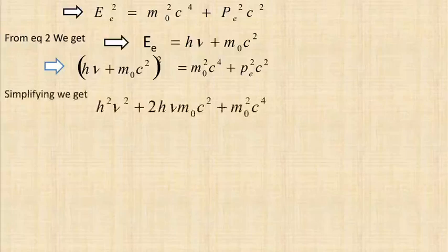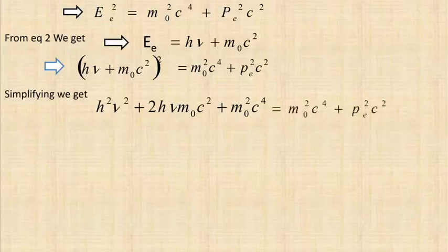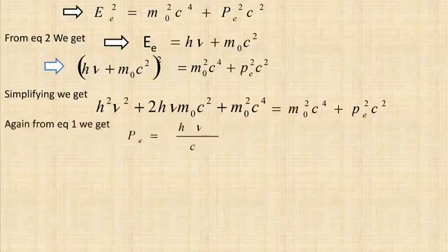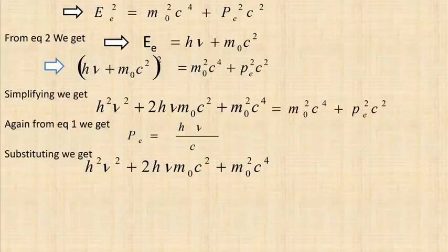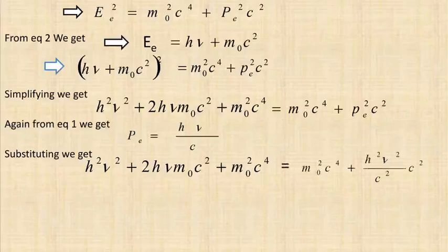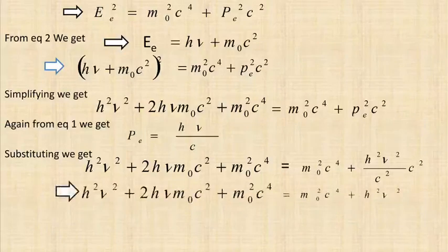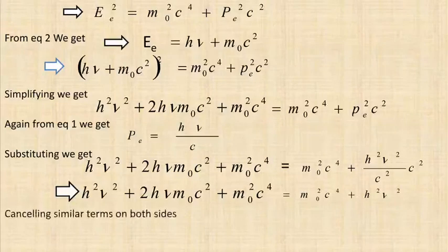Expanding the left-hand side: h²ν² + 2hνm₀c² + m₀²c⁴ = m₀²c⁴ + p_e²c². From equation 1, p_e = hν/c, so p_e²c² = h²ν². Substituting and canceling m₀²c⁴ from both sides, we get 2hνm₀c² + h²ν² = h²ν², which simplifies to 2hνm₀c² = 0. This is impossible.